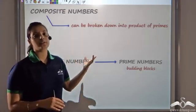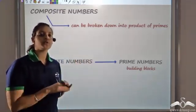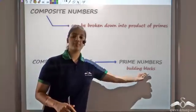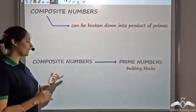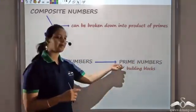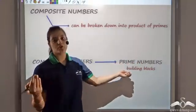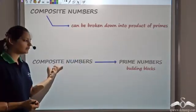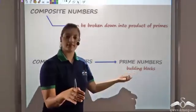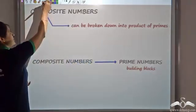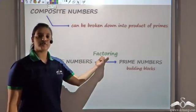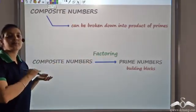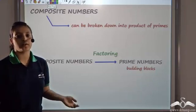We know that any composite number can be broken down into a product of prime numbers. So prime numbers are called the building blocks of composite numbers. When I write a composite number as a product of all its factors, I call that process factoring — the process in which a composite number is completely broken down into all its factors.